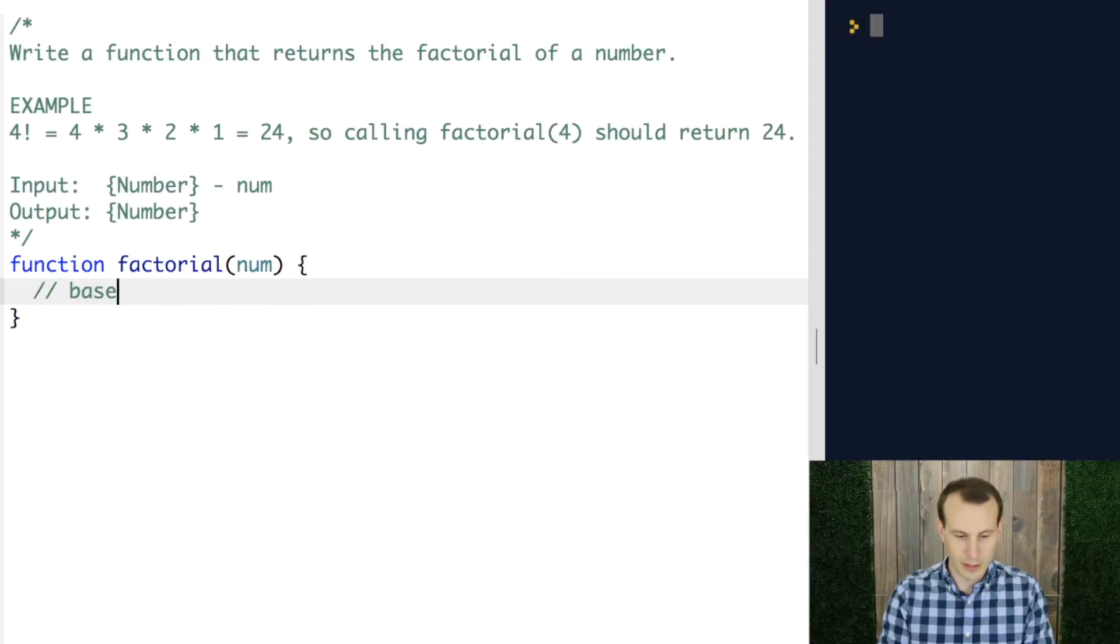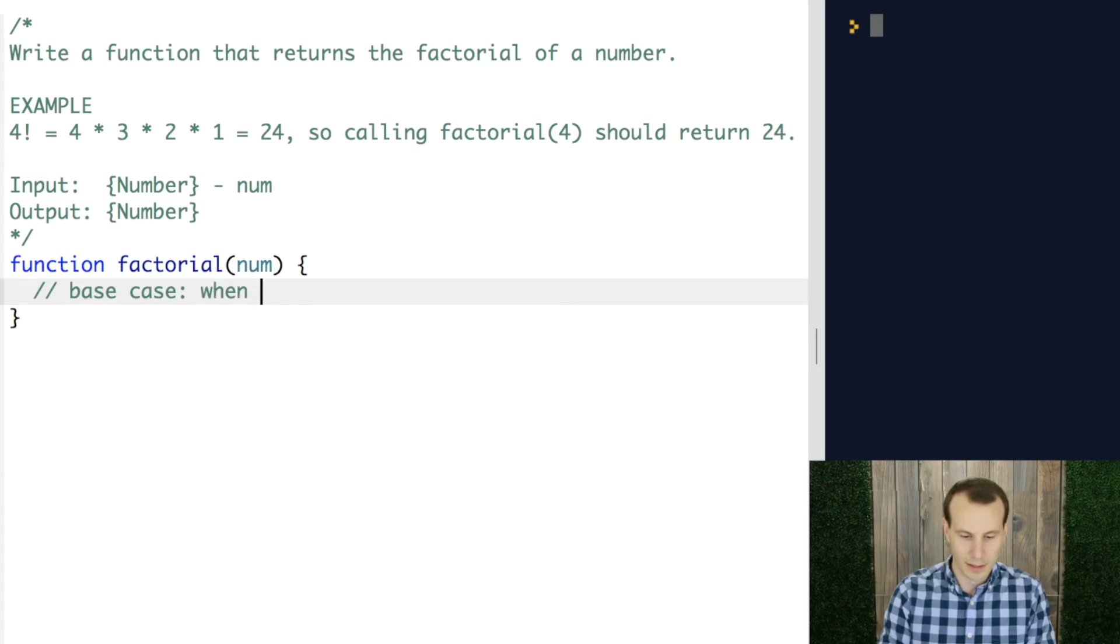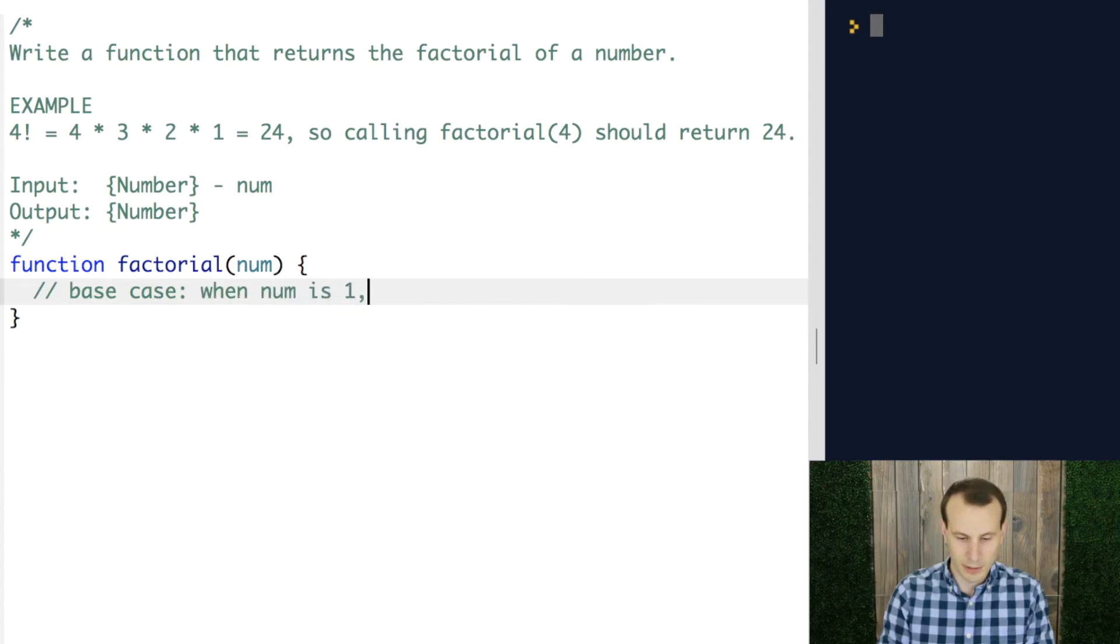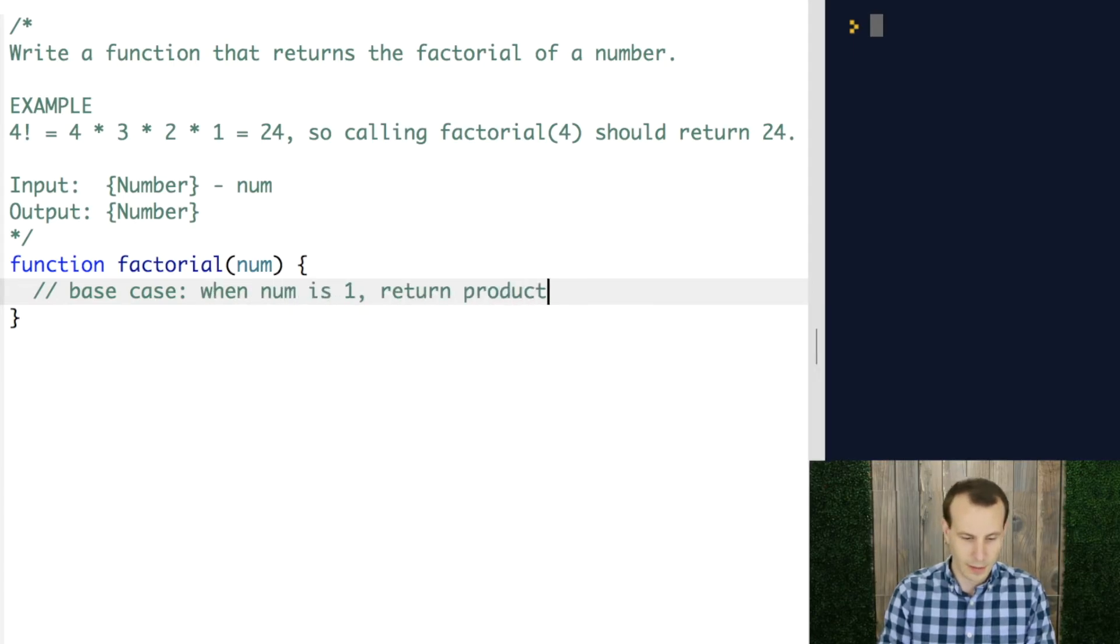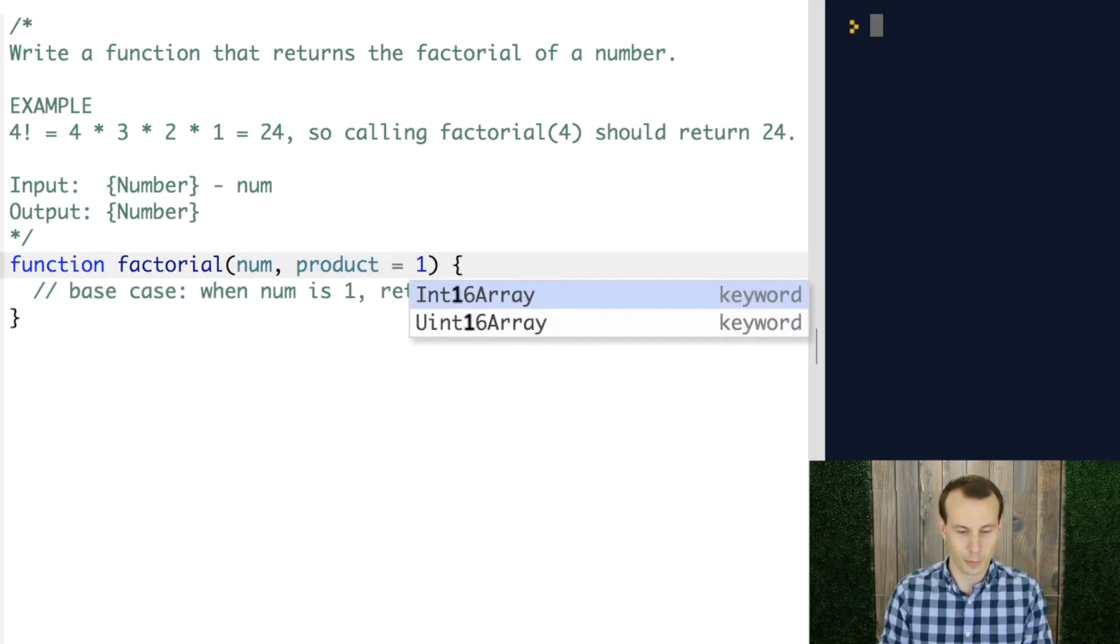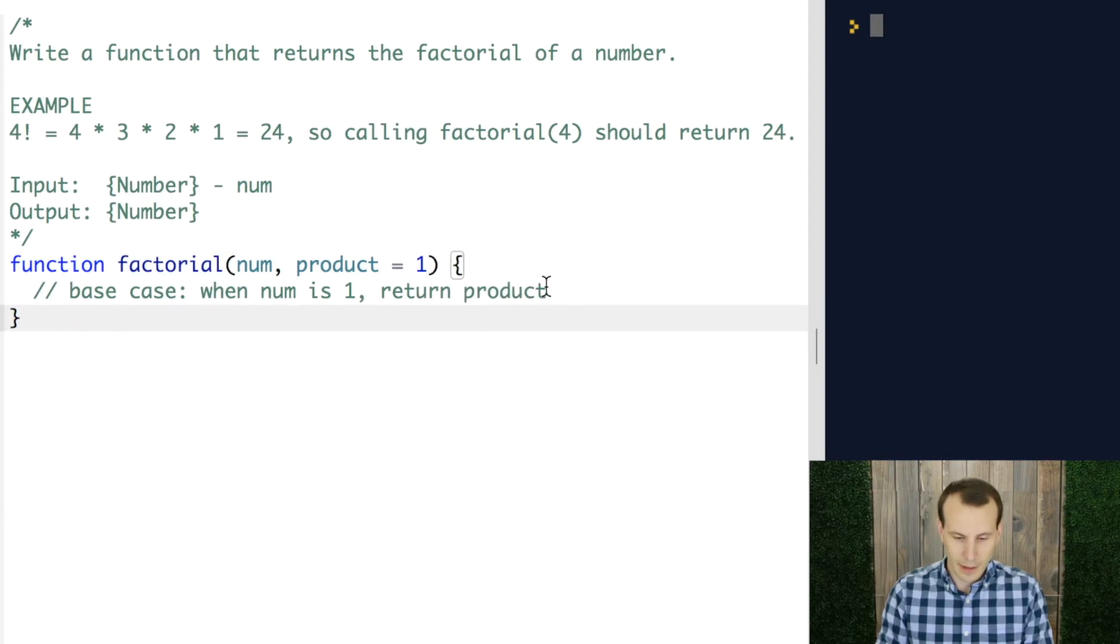So quick pseudocode is the base case is when num is 1, return the product. That means that we're going to want to add this other parameter, default it to 1.